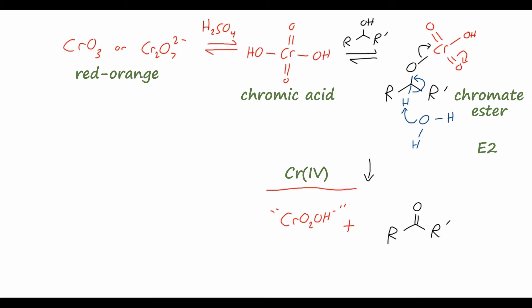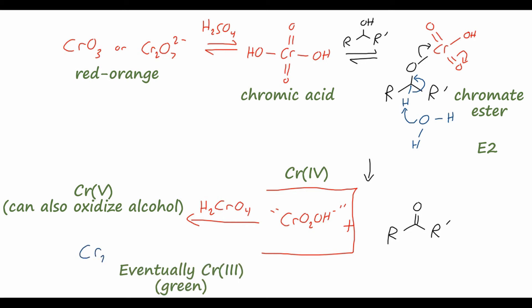But what happens after this initial oxidation is this chromium-4 product reacts with another molecule of chromic acid, the chromium-6 chromic acid, to give another chromium-5 compound. And this chromium-5 compound can act as another oxidizer for the alcohol. So the stoichiometry of that is rather ill-defined, but what we eventually get is this chromium-3 salt that I talked about earlier.